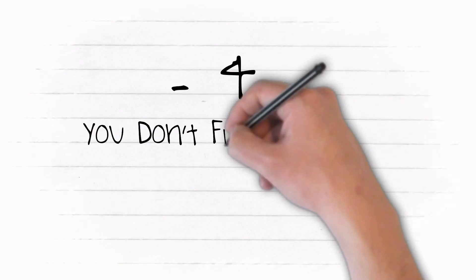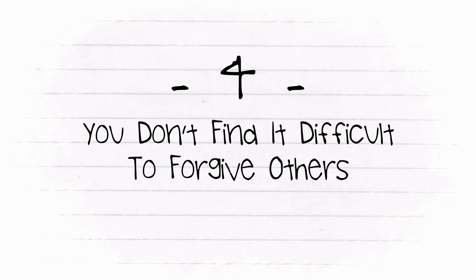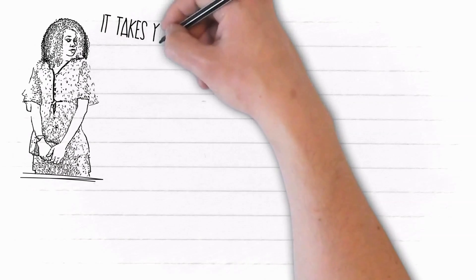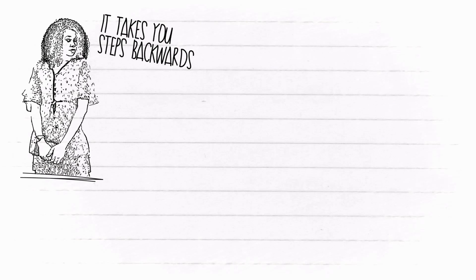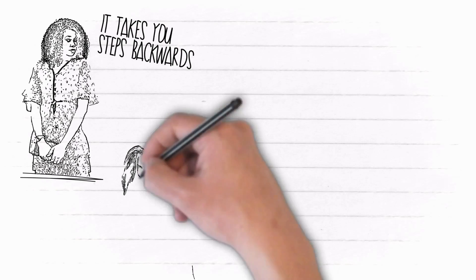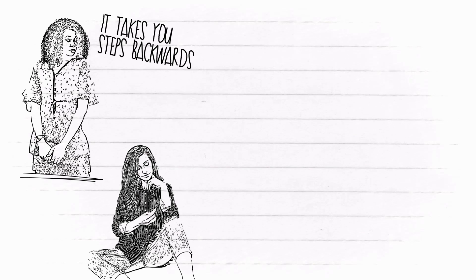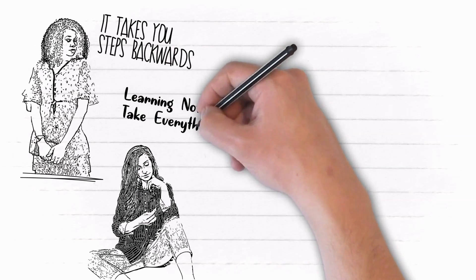4. You don't find it difficult to forgive others. Holding on to hurt, each time you think over it, it takes you steps backwards. For this reason, women who rise above others don't take ages to forgive others. One of the secrets to achieving this is learning not to take everything to heart.